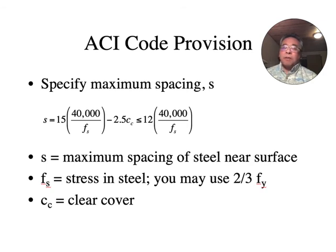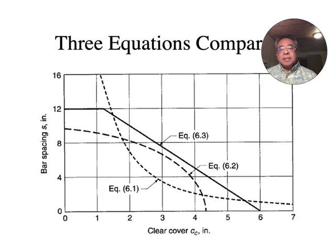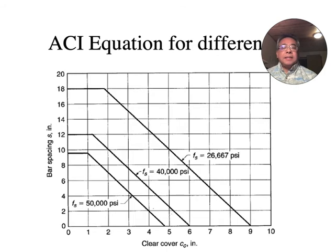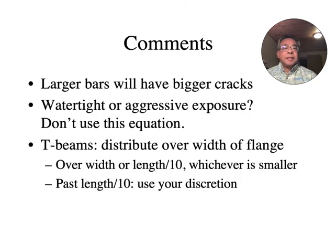And if you compare the Gergely-Lutz, Frosch, and this equation together, you get something like this. And see what I was saying about how the equations sort of do different things. And the solid line there, this is a plot of bar spacing and clear cover. And these are the ACI equations for different amounts of steel stress. And just some comments about this. Larger bars will have bigger cracks. Just remember that when you're doing these things. And if you are really wanting to make something watertight or you're making a tank that has aggressive exposure, don't rely on this equation. Maybe consider looking into some research or perhaps even pre-stressing to keep the cracks small.